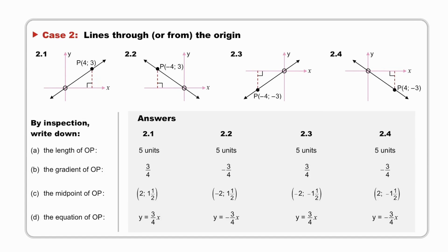The gradient of OP. In 2.1 and 2.3, the gradient is 3/4. Both those lines make acute angles with the x-axis, and we will just follow through to also see what the equations of those lines are, y = 3/4 x, y = mx, and y = 3/4 x for 2.3 as well. And then the gradients of these two lines are -3/4, and their equations are y = -3/4 x.